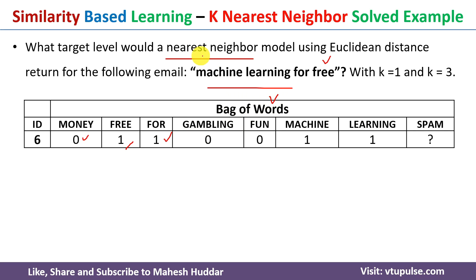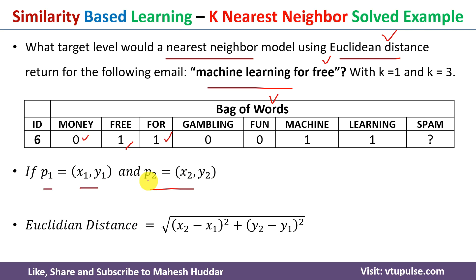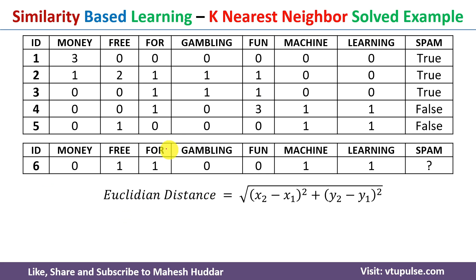Once the textual data is converted to numerical form, we apply the nearest neighbor algorithm using Euclidean distance. The Euclidean distance between two points P1=(x1,y1) and P2=(x2,y2) is given by: square root of (x2−x1)² + (y2−y1)². For our data with multiple features like money, free, for, etc., the same equation is extended across all feature dimensions.